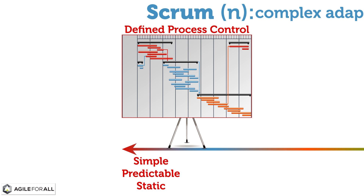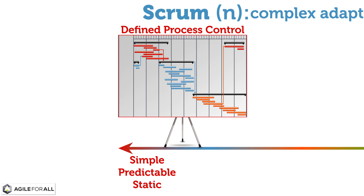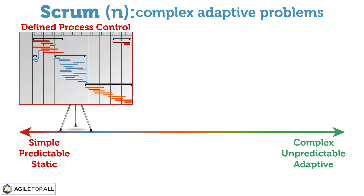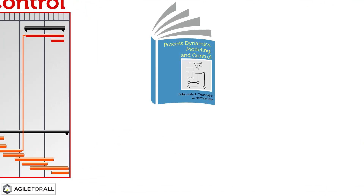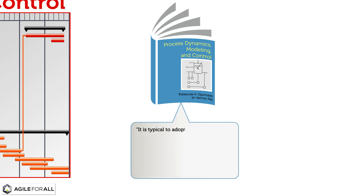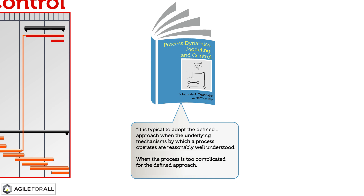This works well when things are predictable. When things are more complex and unpredictable, this approach is not very effective. One of the most frequently cited books on this topic is called Process Dynamics, Modeling, and Control by Bobatunde Ogunaki and W. Harmon Ray. In this book, the authors explain: it is typical to adopt the defined approach when the underlying mechanisms by which a process operates are reasonably well understood. When the process is too complicated for the defined approach, the empirical approach is the appropriate choice.